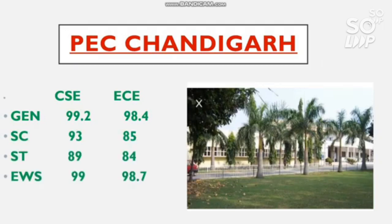The next institution has cutoffs for CS: 98 and 98.4 percentile for General. SC requires 93 and 85, ST requires 89 and 84, and EWS requires 99 and 98.7. There is also no reservation for OBC candidates here. This covers the top 10 GFTI minimum percentile needed to get CS.